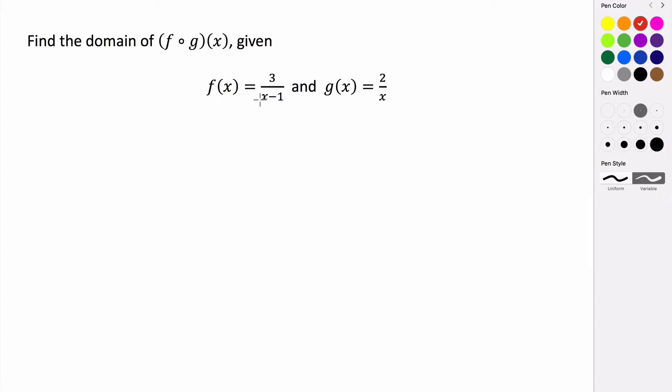First thing we have to consider is what are the domain restrictions on each of our functions individually. We know that for f of x, the denominator cannot equal 0, so x is not allowed to equal 1. And then same here, the denominator can't be 0 so in this case x cannot equal 0.